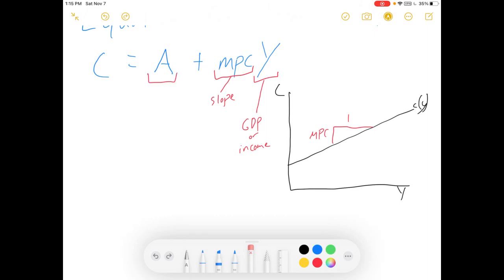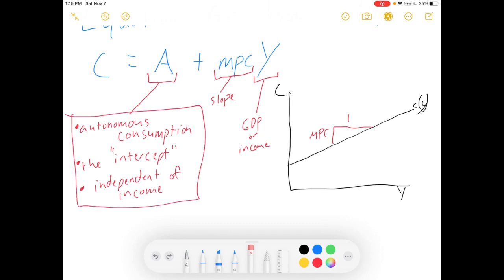And this last term, A, we call autonomous spending, or autonomous consumption. It is the intercept on your graph, and it is the part of your consumption that is independent of income. That thing is there. It's the height in your graph.